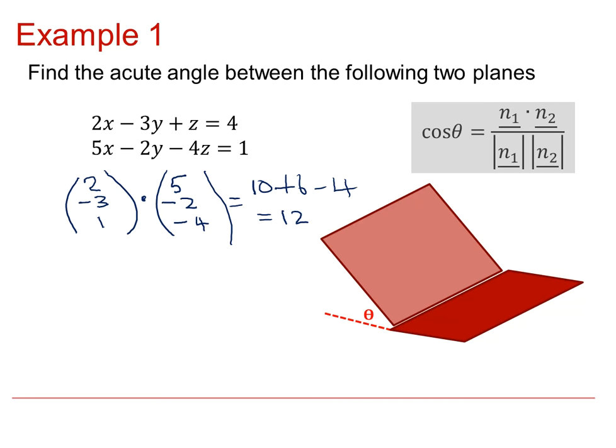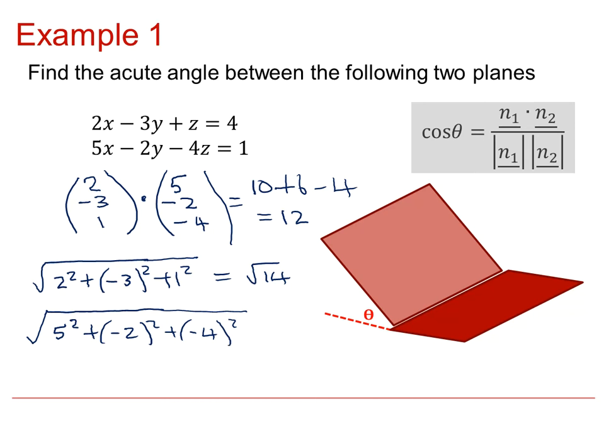The length of the first will be the square root of 2 squared, plus minus 3 squared, plus 1 squared. The length of the normal vector for the second plane will be 5 squared, plus minus 2 squared, plus minus 4 squared. Theta will then be the inverse cos of 12, divided by square root 14, square root 45, which is 61.4 degrees to three significant figures.